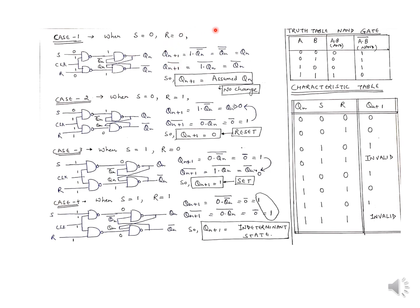We can complete this row in the table: when Qn is zero, Qn+1 is zero; when Qn is one, Qn+1 is one. So the next output is the same as the assumed output — this is the no-change condition.